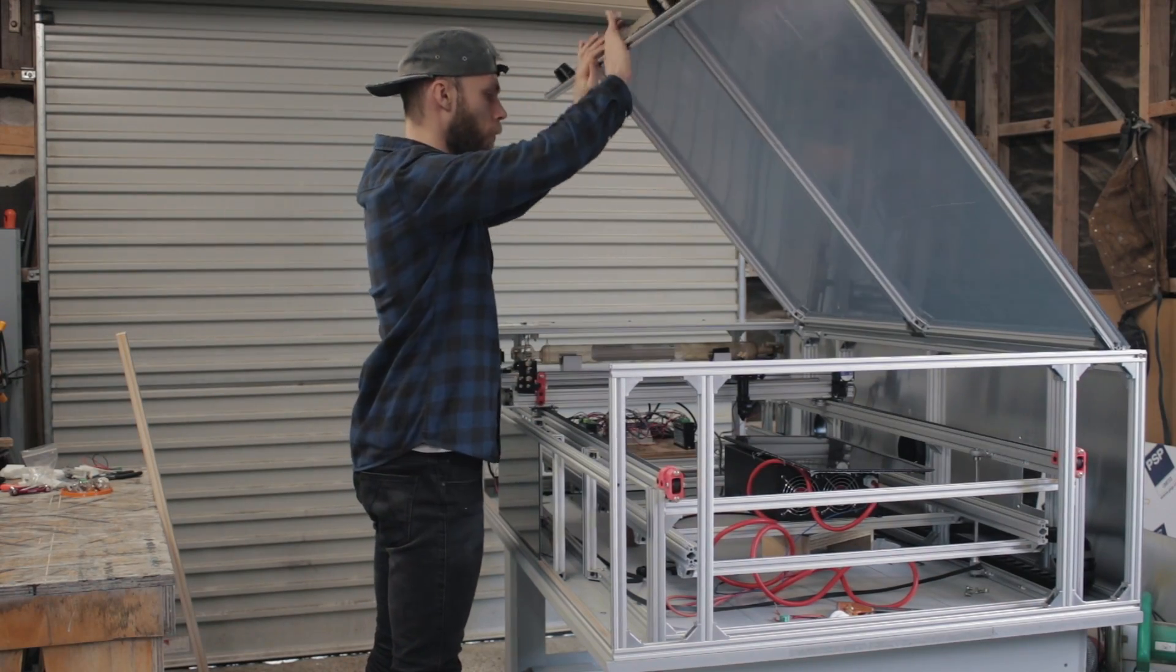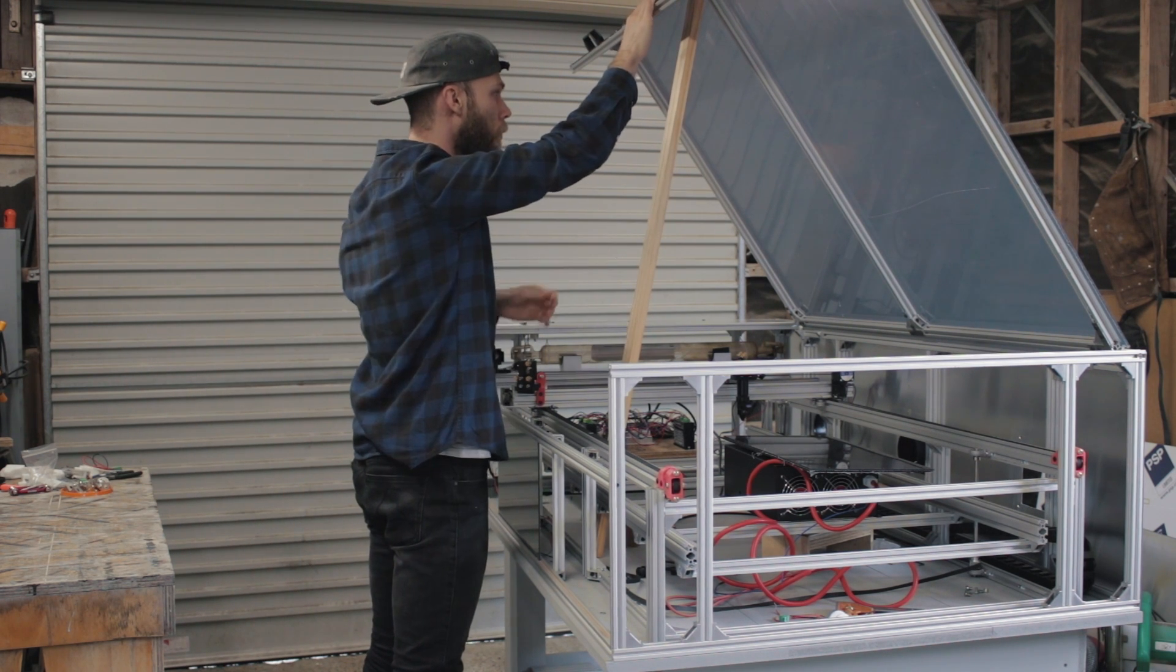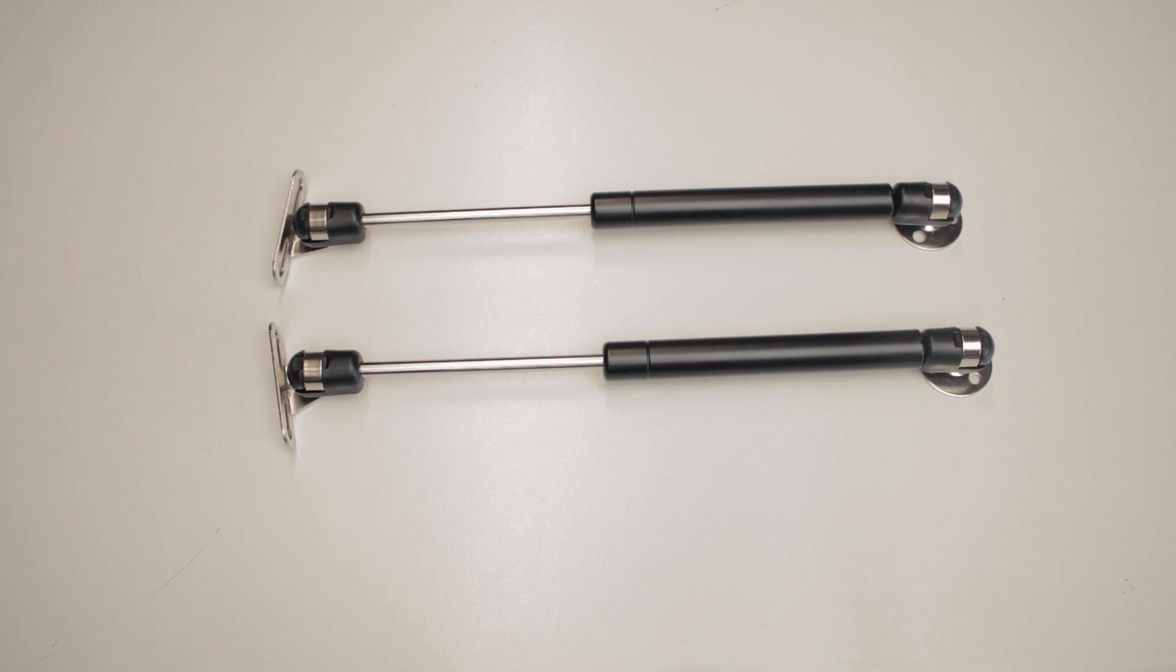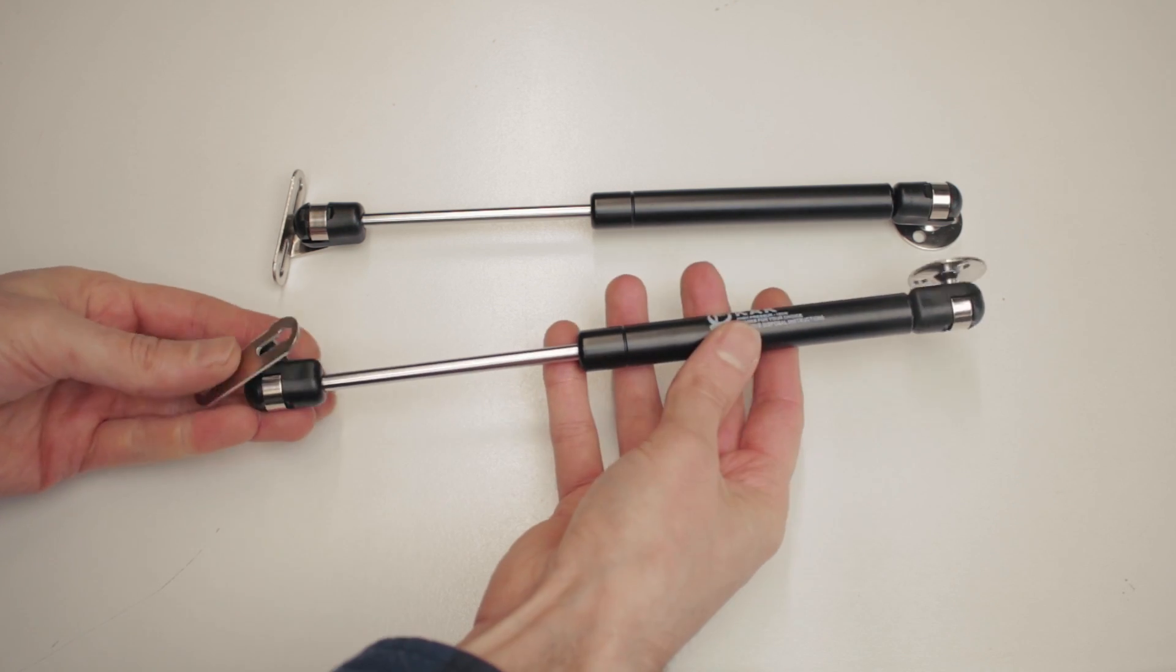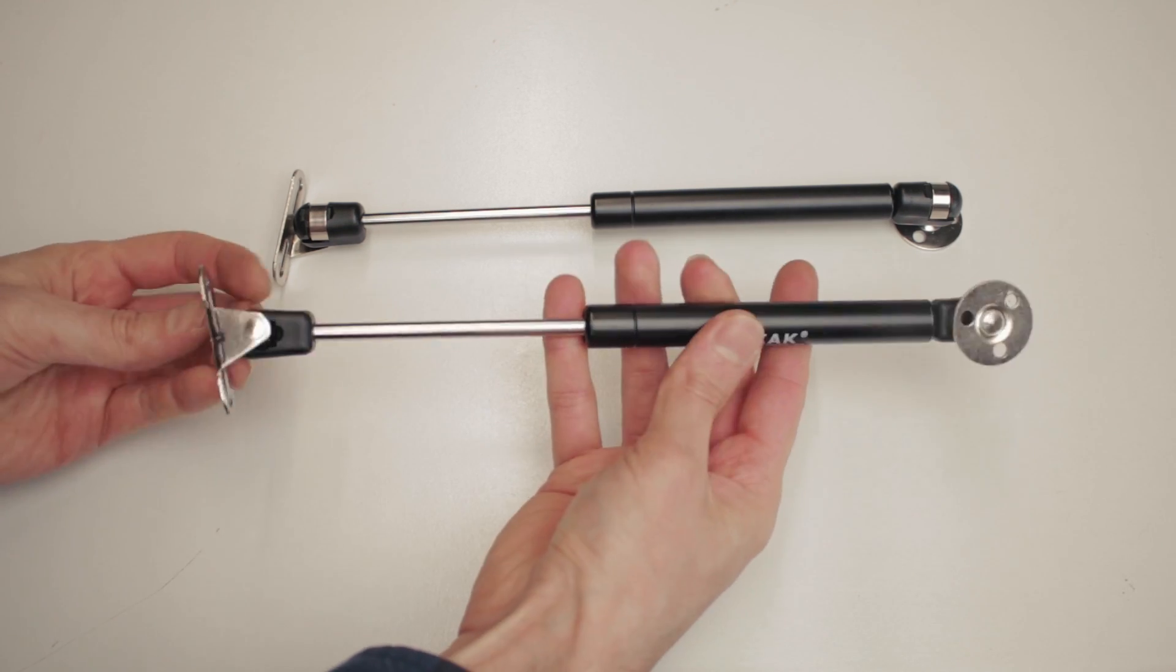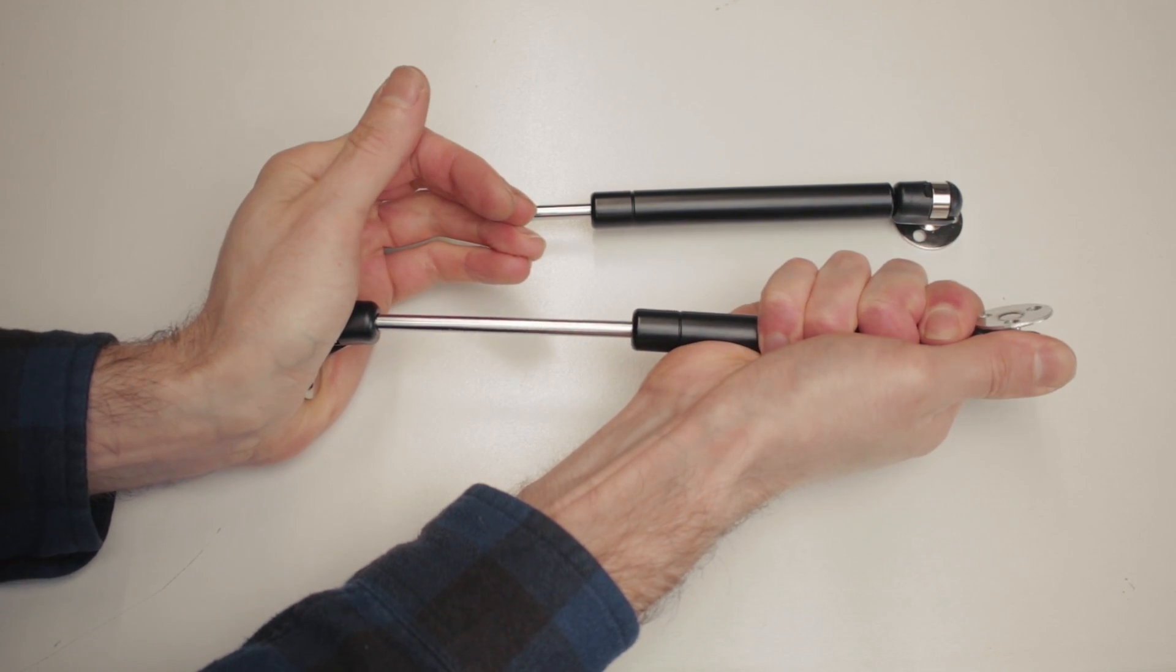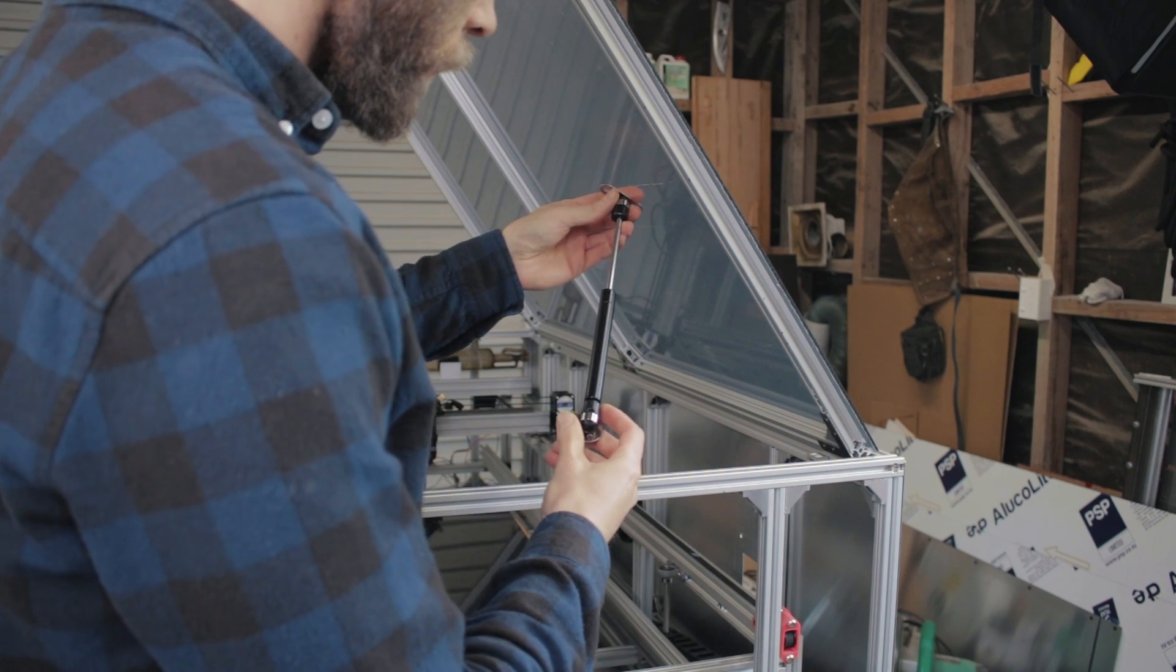As much as I love the rustic charm of holding the lid up with a stick, let's try and improve this situation. So what I have here is a pair of 150 newton gas lift struts. I ordered these before the lid was complete, so I had to guess at the weight. And I'll tell you, when they showed up, I was like, oh no, they're way too small. Until I tried pushing on them. Yeah. So let's have a look at how we can mount them.